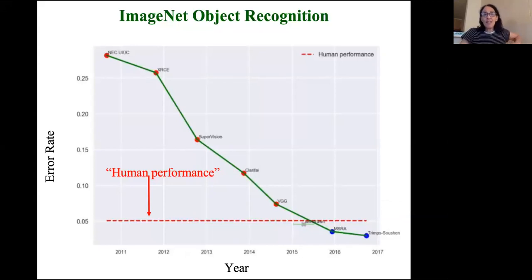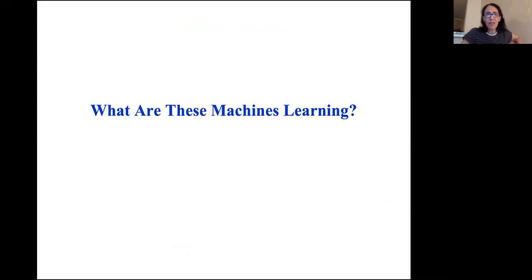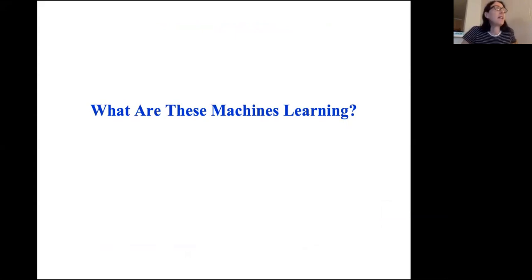We've seen the deep learning revolution where deep neural networks have excelled in language, vision, language, game playing, robotics, and so on. But a big question remains: how do we understand what exactly these machines are learning? It does seem that at least some of the time, the machines are not learning the concepts that we humans have in mind.